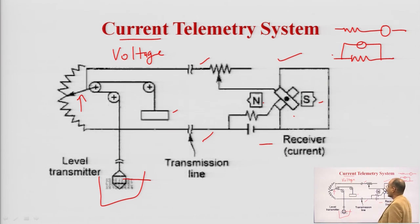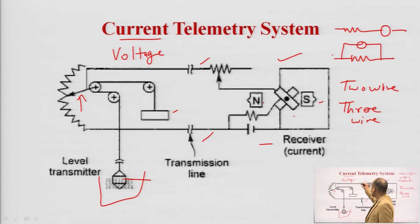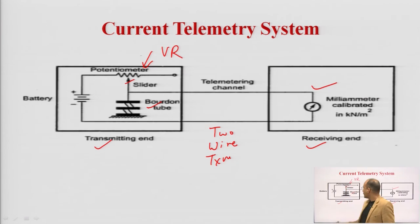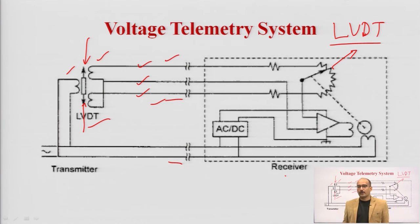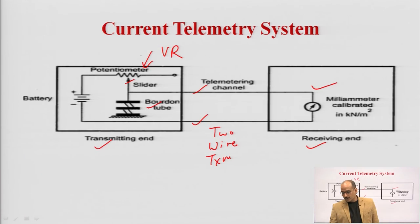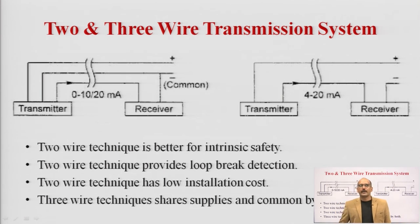Another difference is whether you use two-wire or three-wire transmission. In this diagram, two-wire transmission is used. In the previous LVDT diagram, three wires were used. The two-wire and three-wire transmission systems are arranged as per the current value. For 0 to 10–20 milliampere range, three-wire transmission is used, while for two-wire, only 4 to 20 milliamperes is applied. This topic of two-wire and three-wire transmission is very important and frequently appears in AKTU examination questions, whether worth 5 marks or 2 marks.